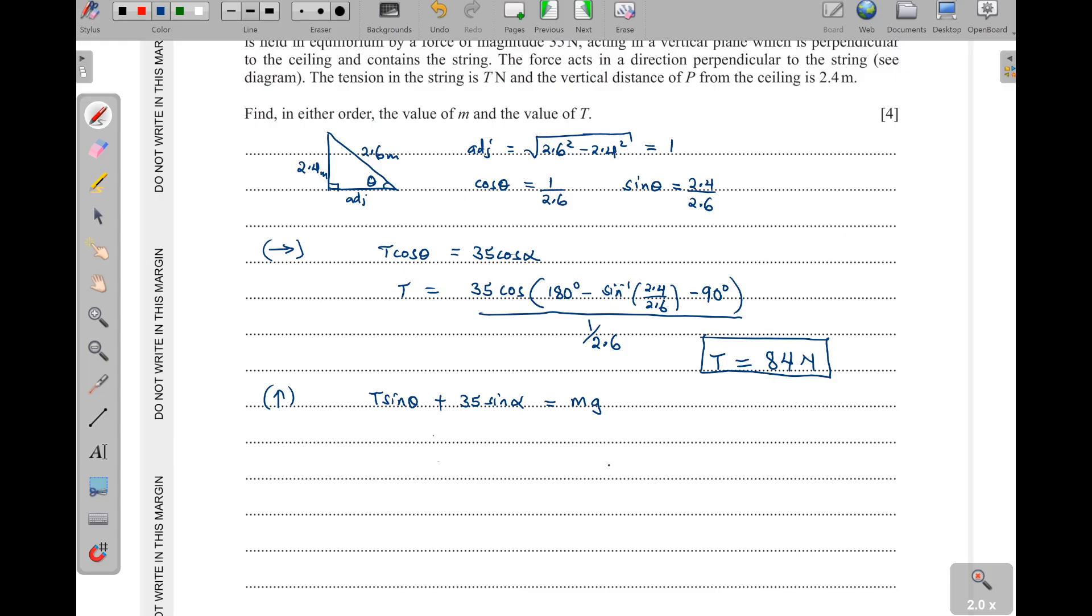So meaning our m is going to be T, which is 84, then sine theta is this one here, 2.4 over 2.6, and then plus 35, then sine of alpha. And remember, alpha is what we got inside here. So I will just slide it here. Sine of 180 then minus the arc sine of that and then the 90. Then from there, we shall divide all through by 10. So what will be our m?